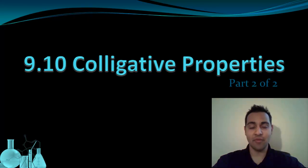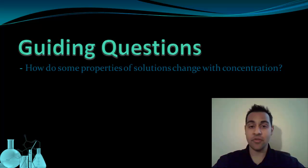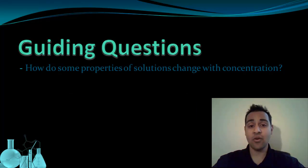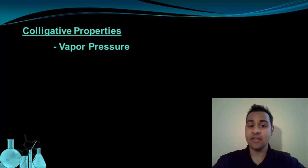Welcome to part two of colligative properties. In the first part, we looked at freezing point depression and boiling point elevation as two examples of colligative properties. We are now going to look at a third colligative property, and that colligative property is vapor pressure.